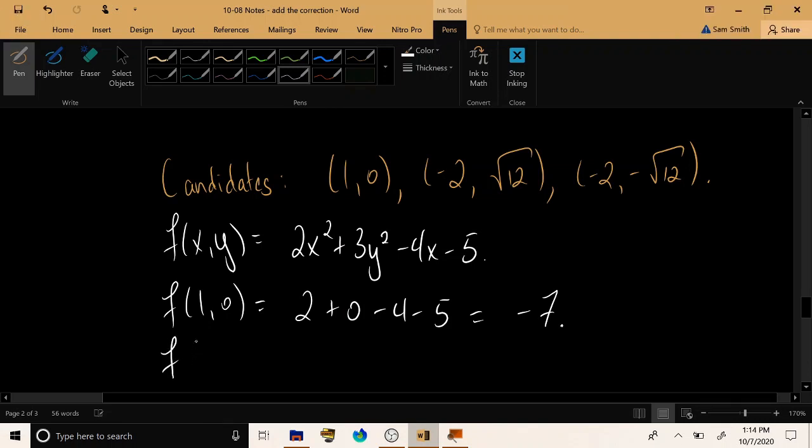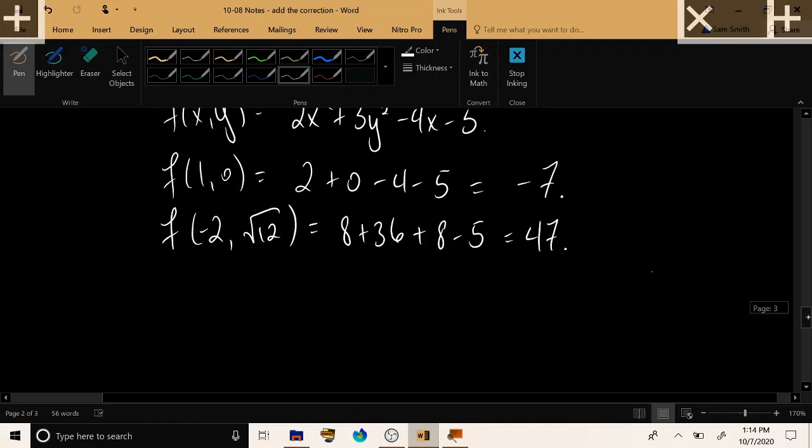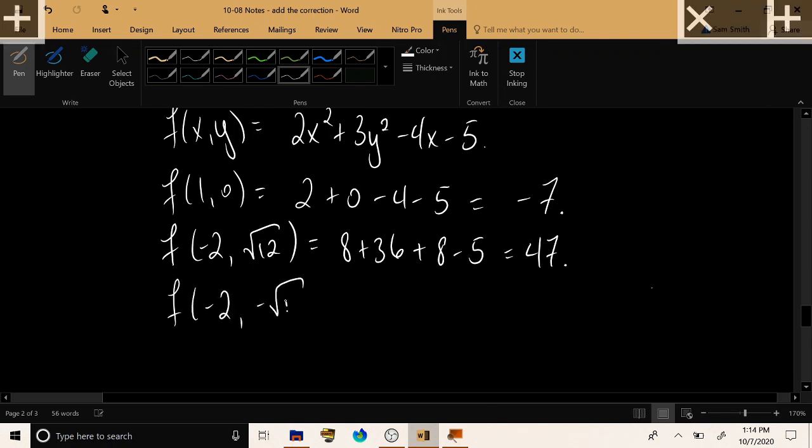Now, let's try the other two points. At negative 2, root 12 for example, we have 2 times 4, 8. We have 3 times 12, 36. We have 4 times negative 2, positive 8, minus 5. So, that looks like 11 plus 36. That looks like 47. And finally, let's see what we get when we plug in the last point. Now, the only difference between the second point and the third point is the sign of the y value. In one case, we have the positive square root, and in one case, we have the negative square root. However, in our formula, the only y that we have is squared. So, positive negative won't make a difference, and this will have the same output of 47.